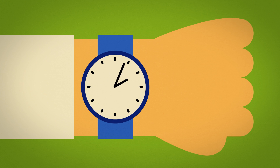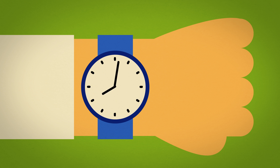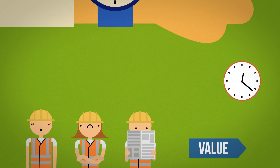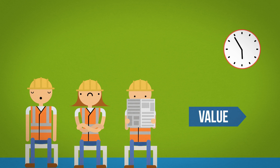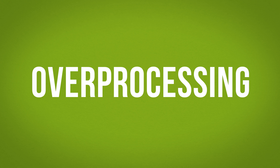The fourth waste is waiting. Waiting refers to the periods of inactivity that occur because the preceding activity didn't deliver on time or finished completely. Waiting waste increases cycle time during which no value-added activity is performed.